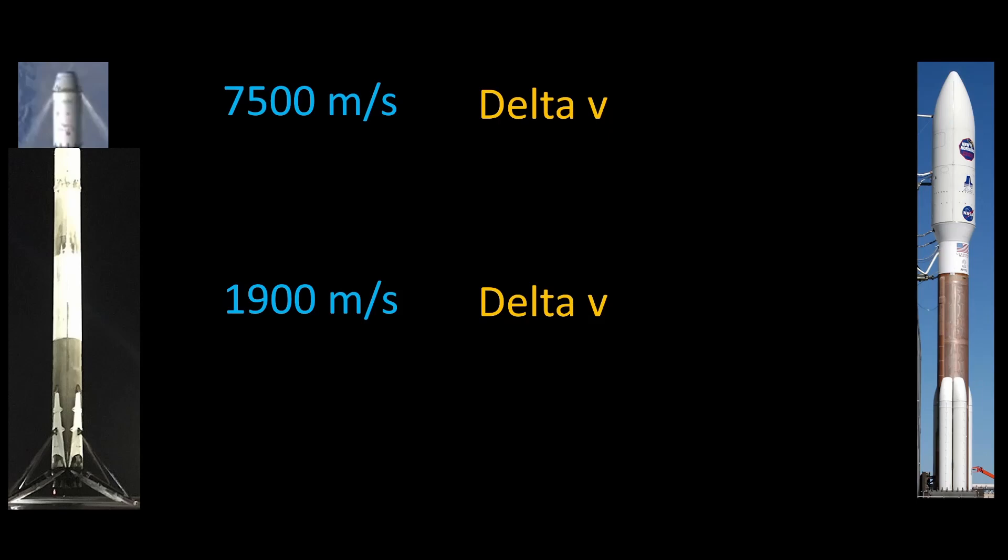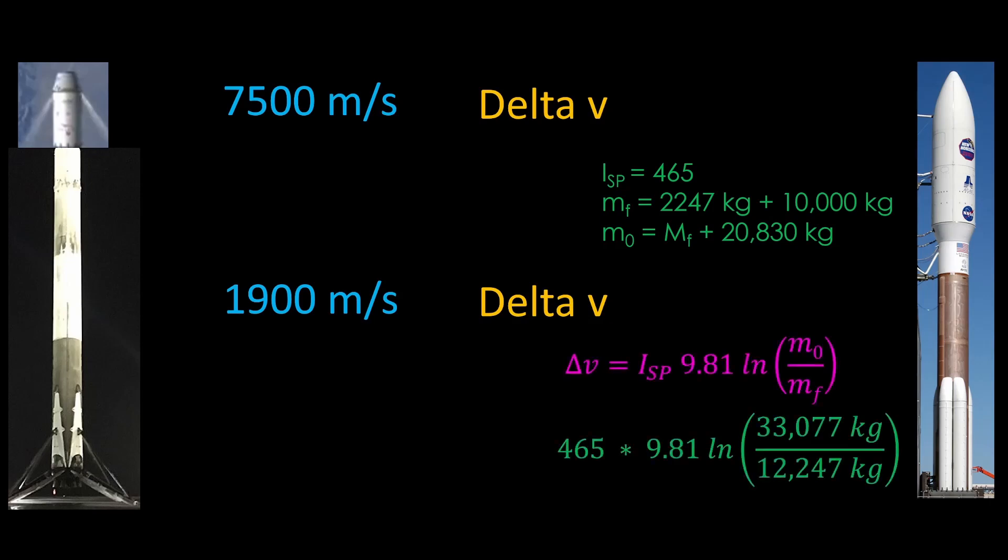We can compare this to a different rocket, the Atlas V with a Centaur upper stage using the RL-10 engine. The RL-10 burns hydrogen and oxygen and has a specific impulse of 465, which is great. The final mass is the mass of the Centaur stage, 2,247 kilograms plus the 10,000 kilogram payload. The initial mass is the final mass plus the amount of propellant the stage carries, which is 20,830 kilograms. We now have what we need to do the rocket equation. The delta V is 465 times 9.81 times the natural log of 33,077 kilograms divided by 12,247 kilograms. Do the calculation and we get 4532 meters per second.